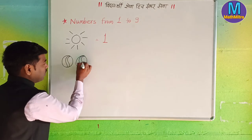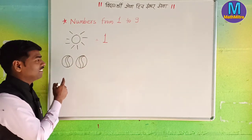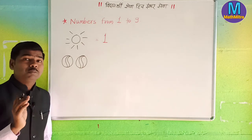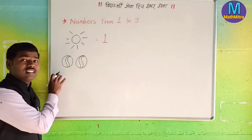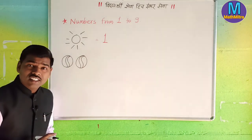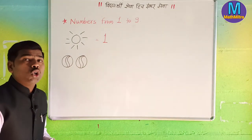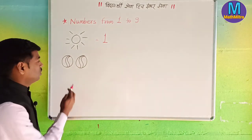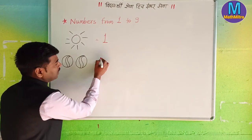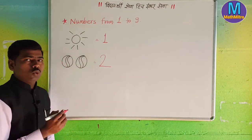What is this? This is a ball. These are the balls. How many balls are there? There are two balls — one, two. How many balls are there? This is two.